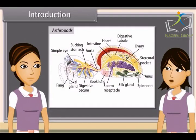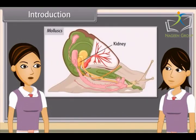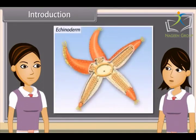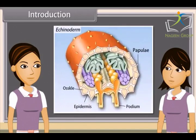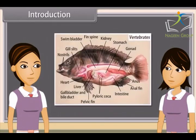In arthropods, excretory organs are coxal glands, antennary or green glands, and Malpighian tubules. While in molluscs, it is kidneys. Similarly, in echinoderms, excretory organs are dermal papulae, while in urocordates it is the neural gland, and in cephalochordates it is protonephridia. In vertebrates, excretory organs are one pair of kidneys.